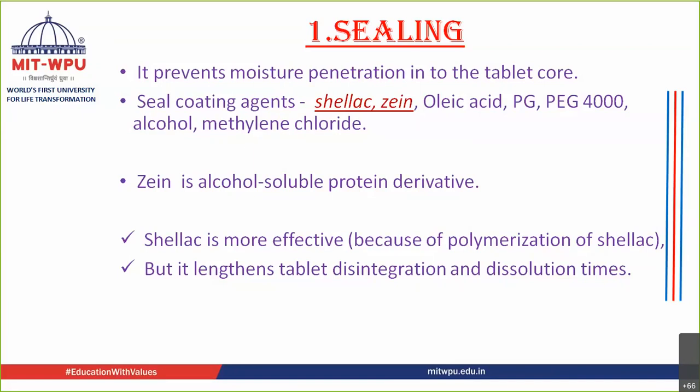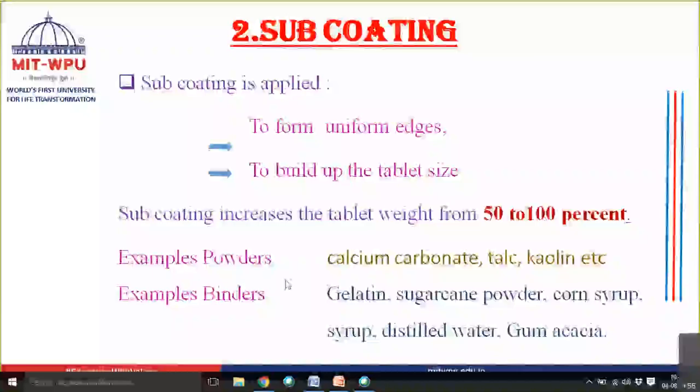You don't want moisture to penetrate inside the tablet core, because if moisture enters and further coating is applied on top of it, the moisture cannot escape. This trapped moisture will then cause degradation — hydrolysis — of the tablet, as seen in pre-formulation. To avoid this degradation, you apply a seal coat to the tablet first.